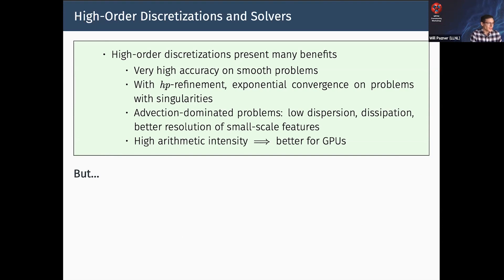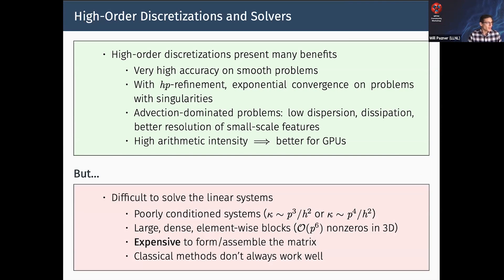But of course there's always a catch. One of the catches is that it's difficult to solve the linear system resulting from higher-order methods. One reason is that they're poorly conditioned. The condition number will depend on the problem, your basis, and the discretization method, but it will typically scale like p³/h² or p⁴/h². So as p goes up, this gets pretty bad.